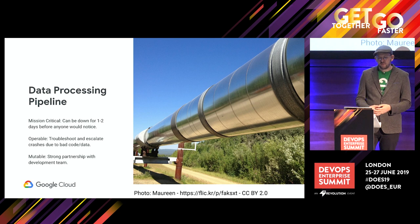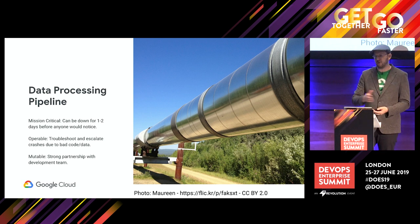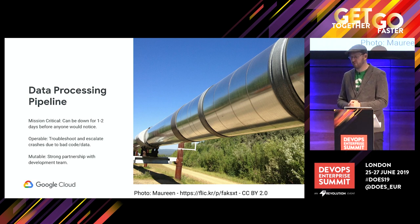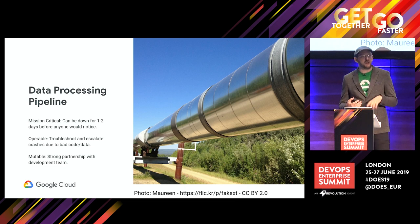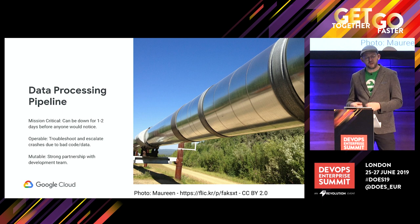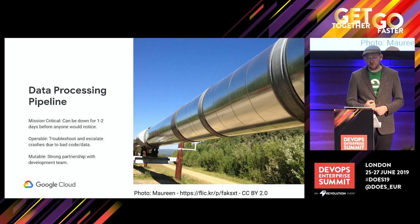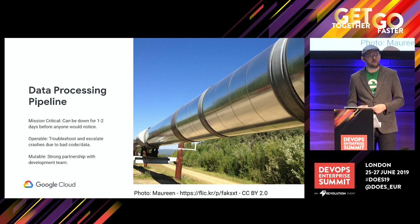A data processing pipeline. It might be possible for it to be down for a while before it has business impact — data goes in one end, six to twelve hours later it comes out the other, and it doesn't actually affect anything for a couple of days. But it's also going to be pretty operable: scaling it, maintaining it, debugging bad data, and troubleshooting — there's lots to do. SRE teams I've known that have engaged on data pipelines end up forming an extremely strong and productive relationship with their dev team. This is actually somewhere SRE can provide a lot of value, but perhaps there's something more critical that would provide more immediate value that you should apply SRE to first.